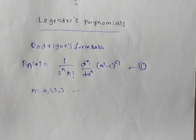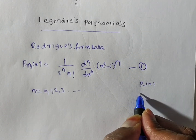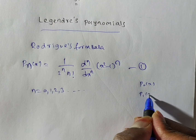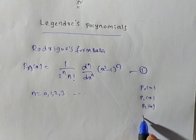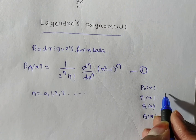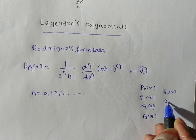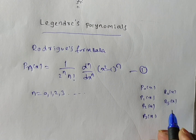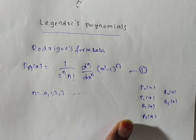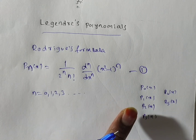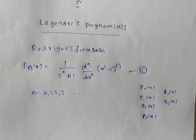I am going to solve the Legendre polynomials: P0 of x, P1 of x, P2 of x, P3 of x. If you put n equal to 4, then we have P4 of x, P5 — up to P5 they will generally ask. So in this video I will solve P0, P1, and P2 only.